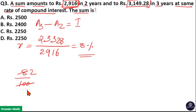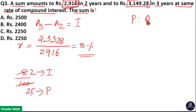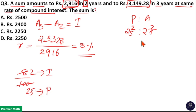At 8% interest, 8 per 100 means 2 parts interest from 25 parts principal. So the ratio of principal to amount is 25:27 (25 parts principal plus 2 parts interest). For two years, we raise both to the power of 2, giving 625 parts principal to 729 parts amount.